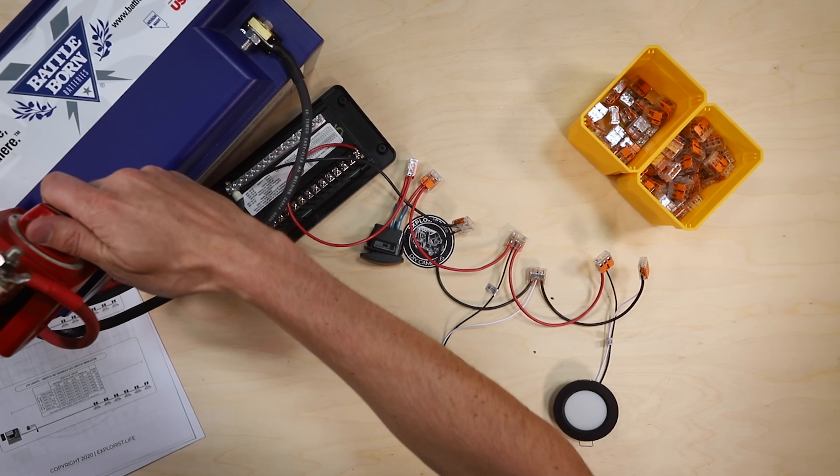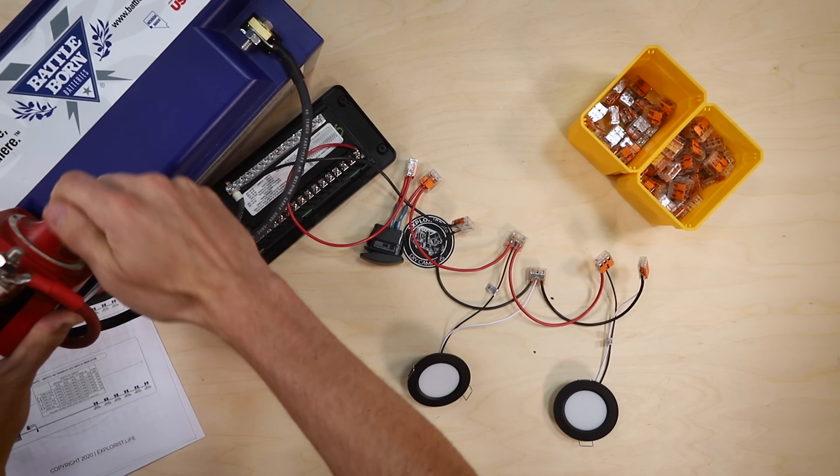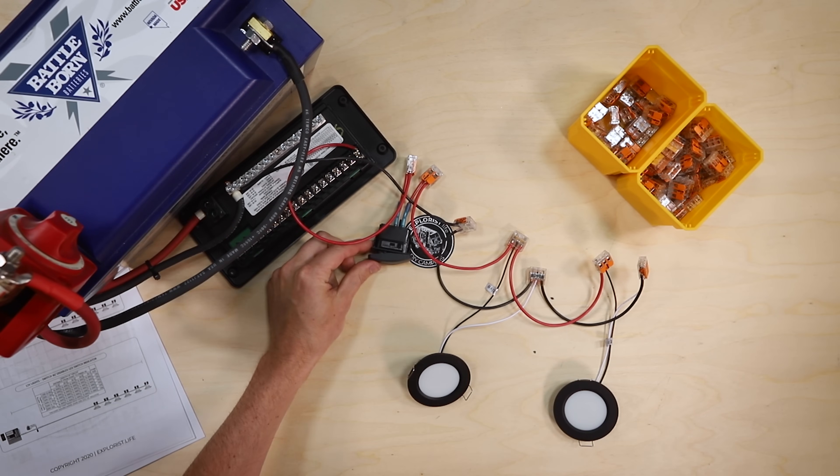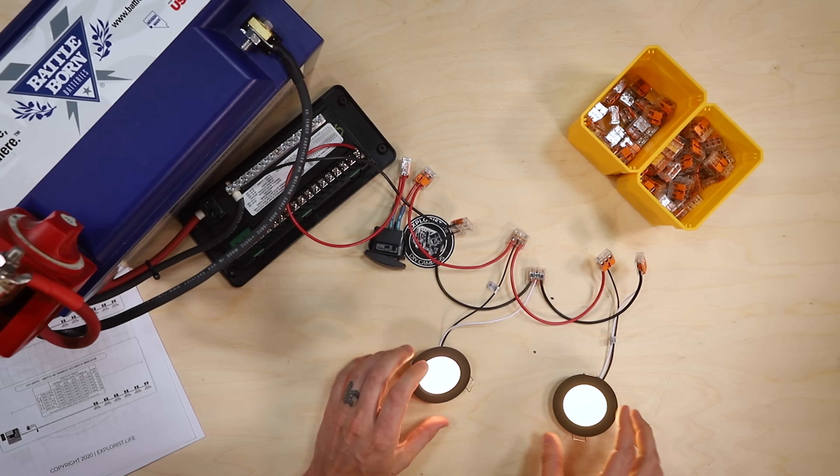So we have positives to positives, positives to positives, negatives to negatives, negatives to positives. So should be good to go here. Go ahead and turn my master switch back on, turn the switch on here, and both of these turned on. So good to go here.